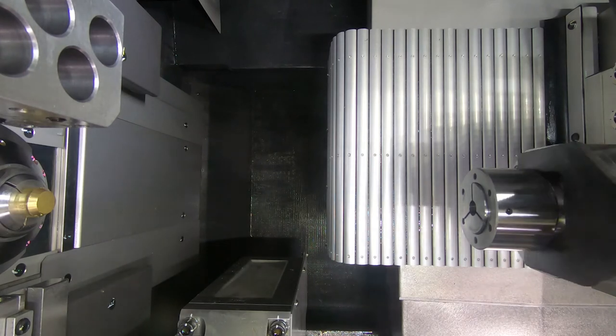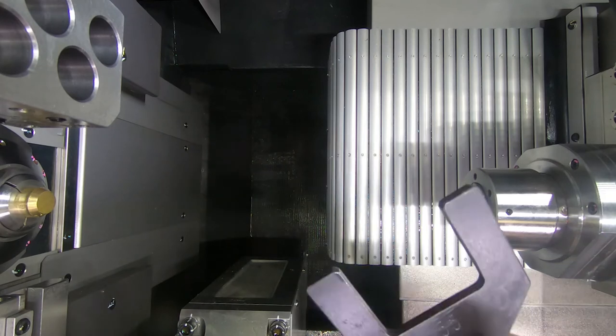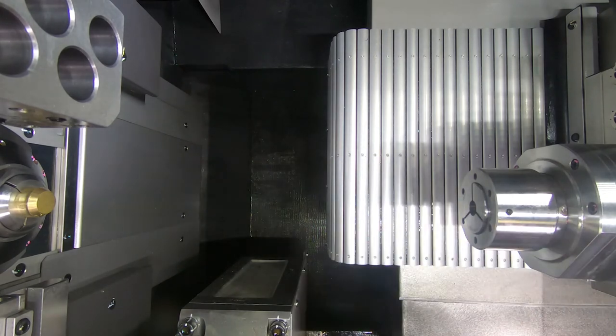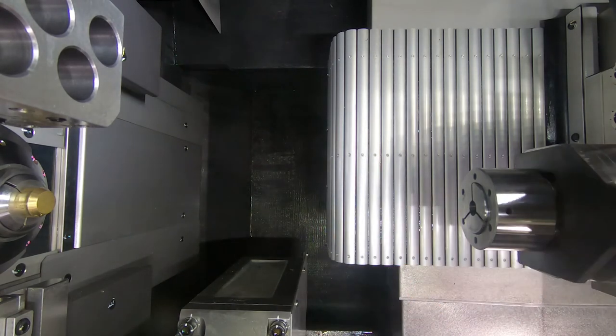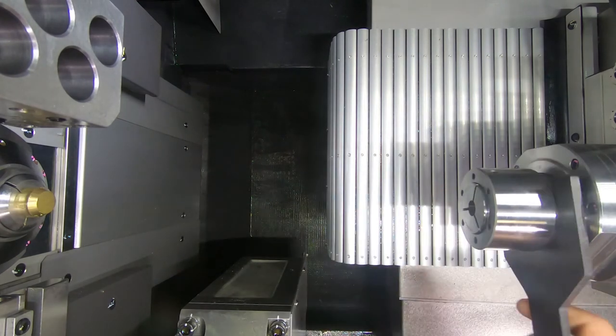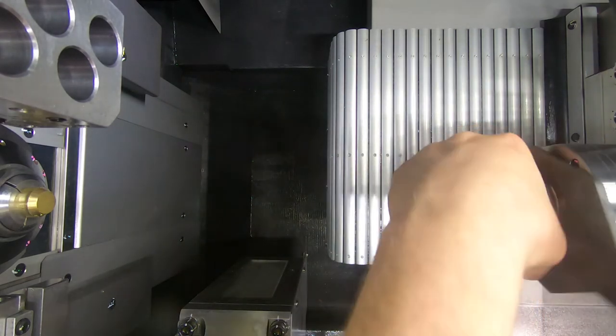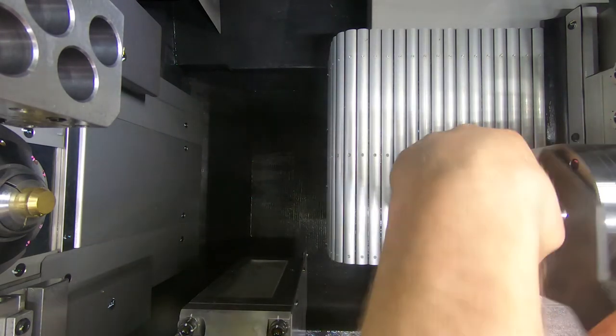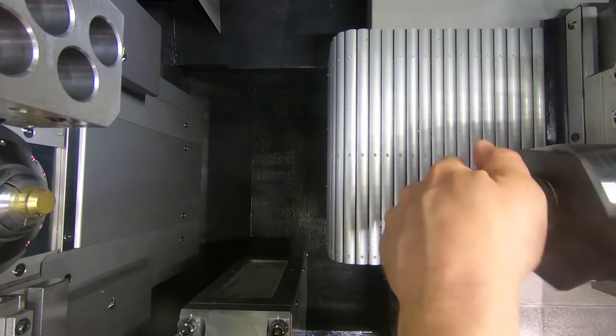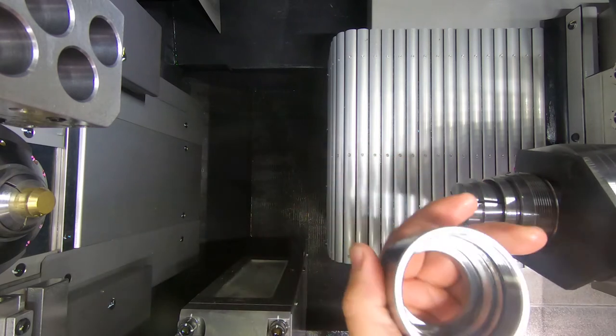These wrenches come with the machine here in the red toolbox. You have a 55mm and then you have a two-pin spanner here. Right-handed thread, turn it counterclockwise. Go ahead and take this off. That's my nut.